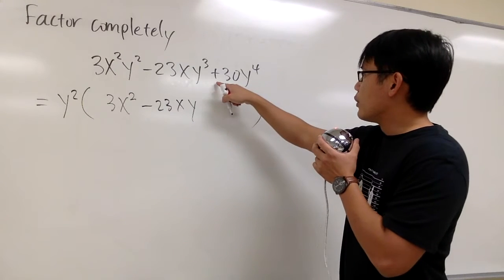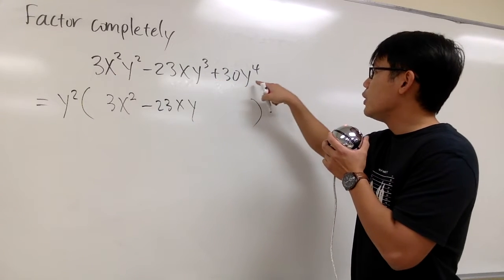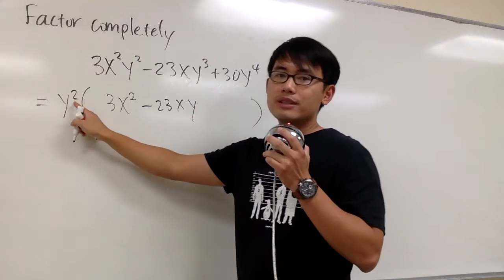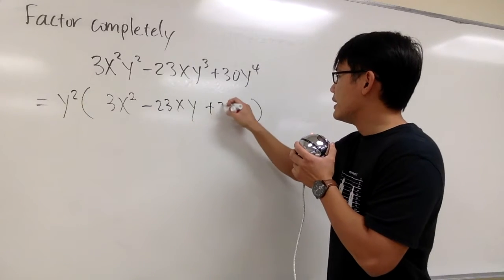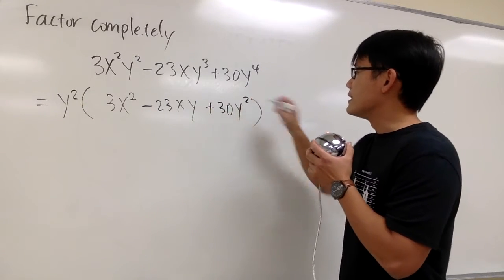And lastly, originally we have plus 30y to the 4th power, but we took 2 out, so we have plus 30y².